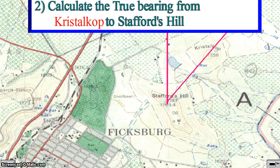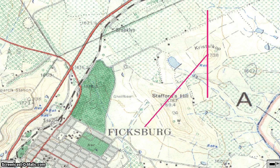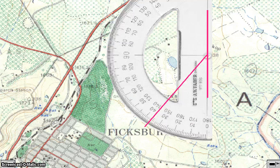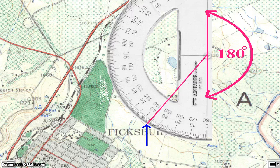In order to calculate the true bearing from Crystal Corp to Stafford's Hill, draw a north-south bisector through Crystal Corp. Always measure bearing in a clockwise direction. The angle from Crystal Corp to Stafford's Hill is therefore 180 degrees plus 37 degrees, which gives you a total of 217 degrees.